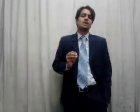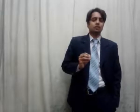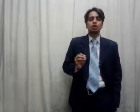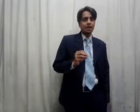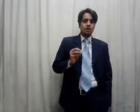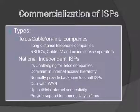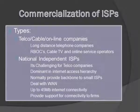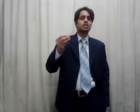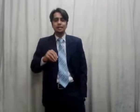The first type of ISP is telco, cable, or online organizations. These are long-distance organizations providing internet service through telephone lines. As a whole, these organizations operate across different countries, and one can dial from one country to another to access the internet. They are very high in cost.